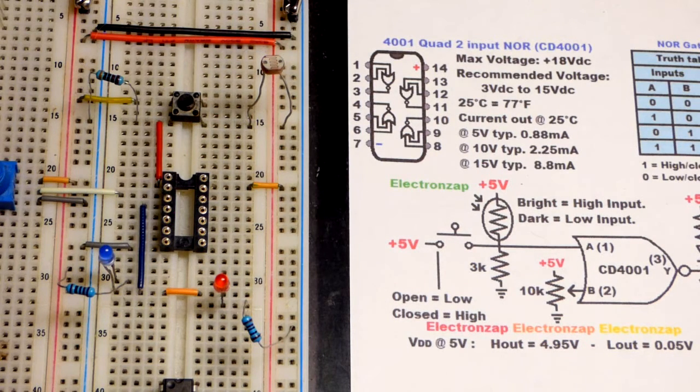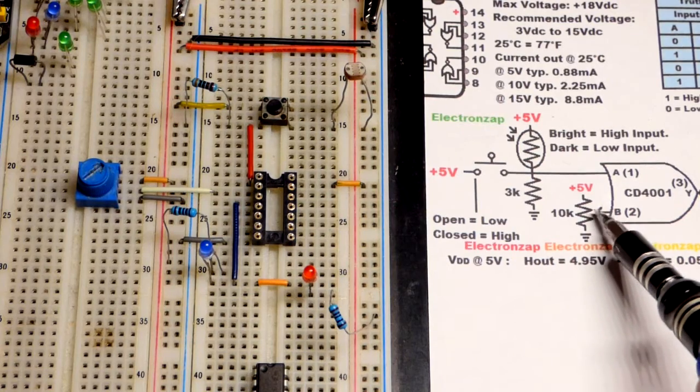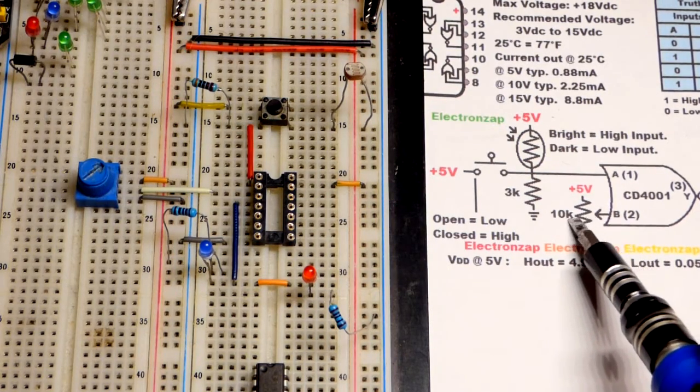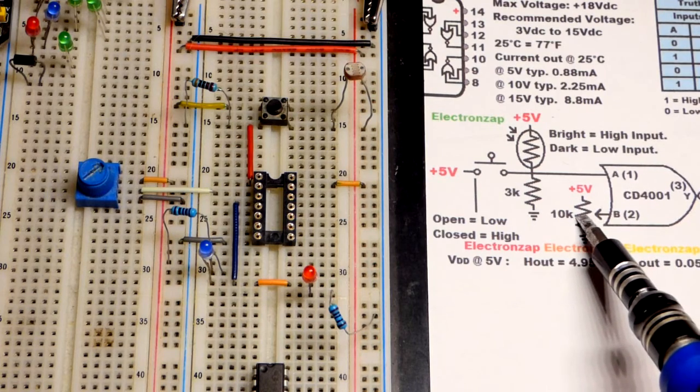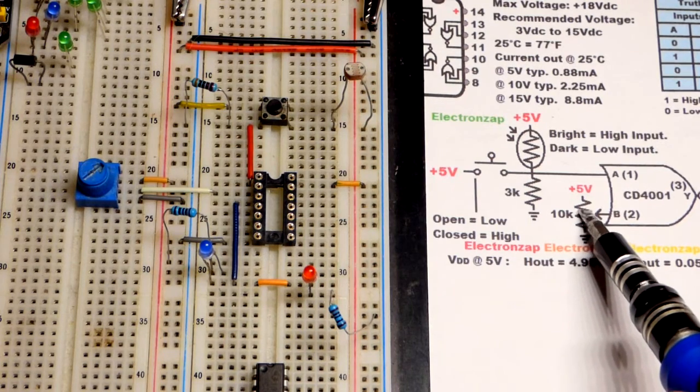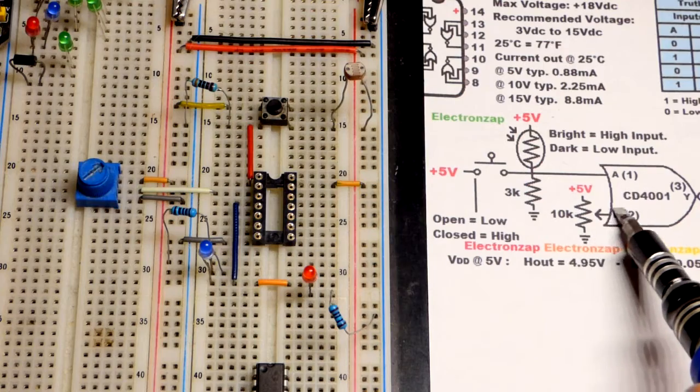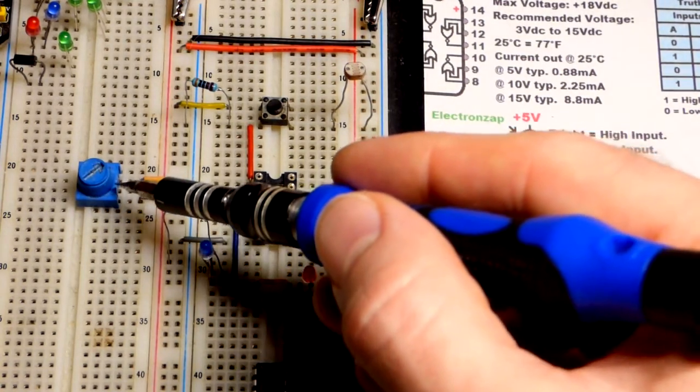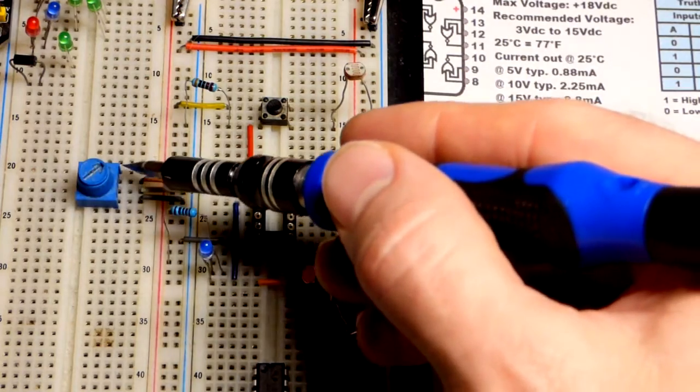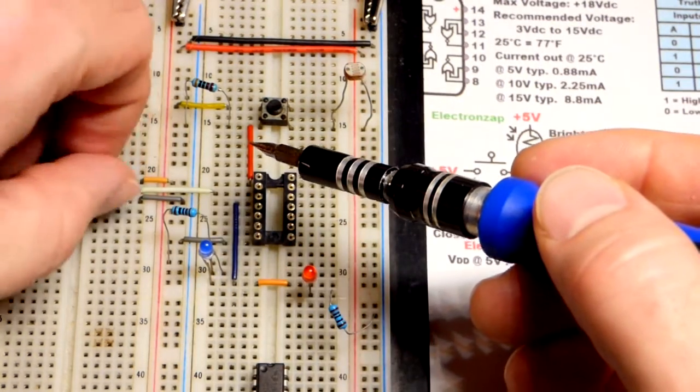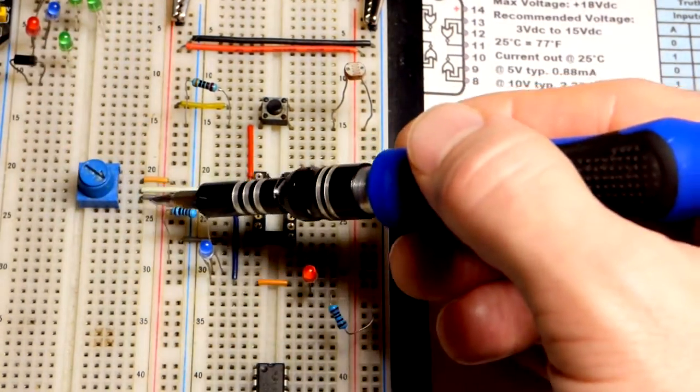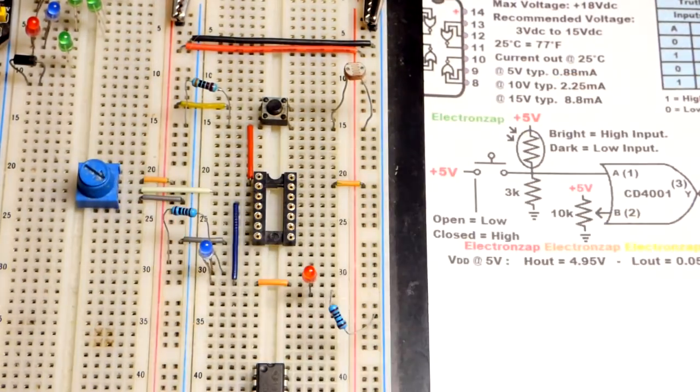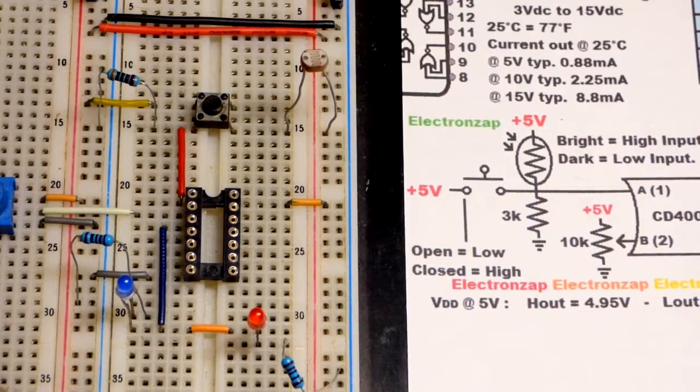The first input, input B, is pin number 2. That's going to a trim pot, a variable voltage divider. We can go all the way up to five volts or all the way down to zero volts. The white jumper to the middle pin connects to the wiper - we can go to five volts or down to the negative rail at zero volts.